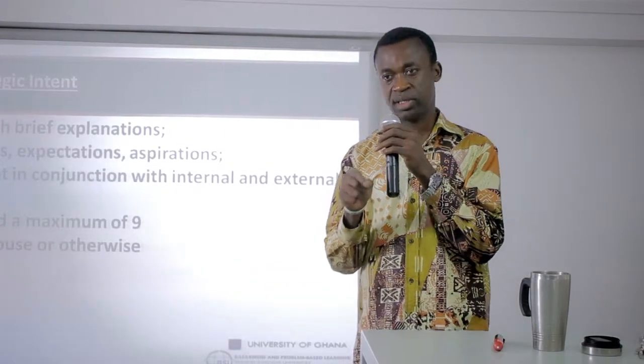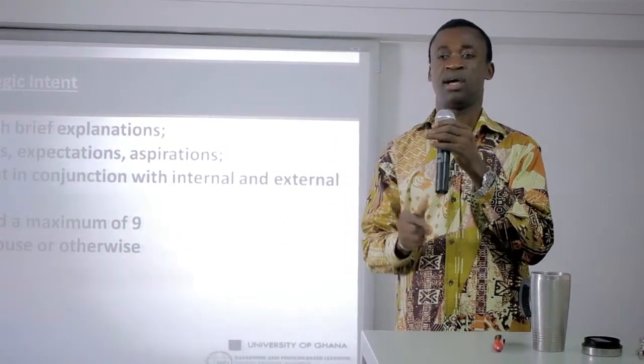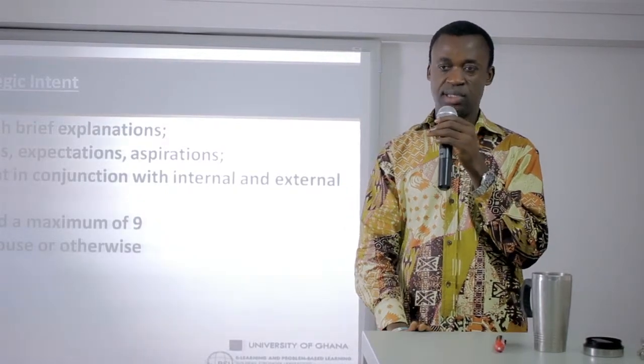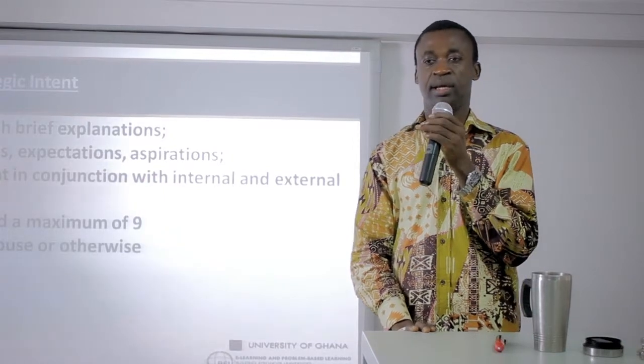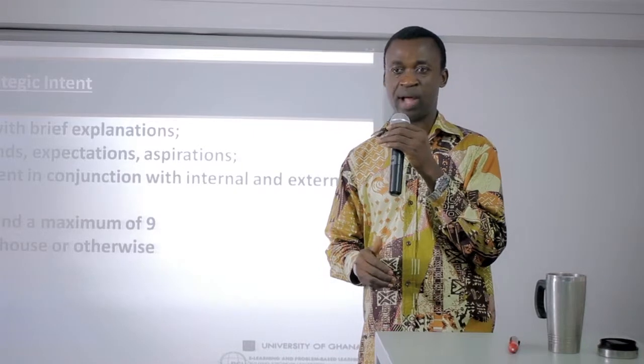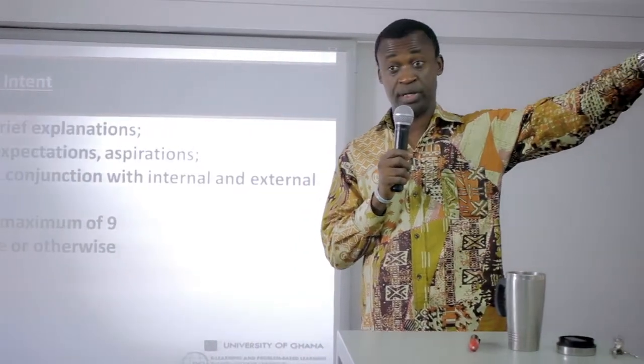In designing strategic intent and priorities there is a particular form it must take from a strategic planning viewpoint. Once we have our intents and priorities, we then translate them into a vision and a mission. For example, if you look at the University of Ghana strategic plan, you will see strategic priorities — about nine of them. The university also has a vision, a mission, and strategic intent.